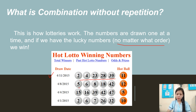More examples of combination without repetition: 5, 6, 8, 18, 42 — no repetition. 15, 16, 39, 42, and 47 — no repetition. 2, 6, 7, 26, and 32 — there is no repetition of numbers.